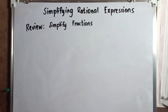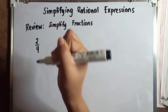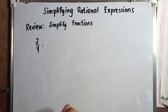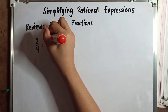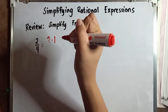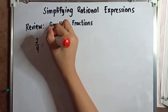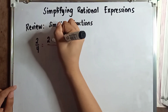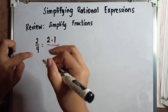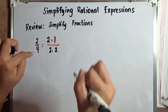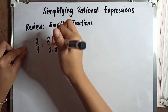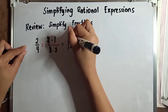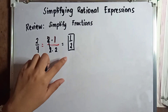you are asked to simplify 2 over 4. We need to get the prime factor of 2 and 4. The prime factor of 2 is 2, or 2 times 1. The prime factor of 4 is 2 times 2. We need to cancel out the common factor, which is 2 and 2. So what remains is 1 half. Once you are asked to simplify 2 over 4, the answer is 1 half.